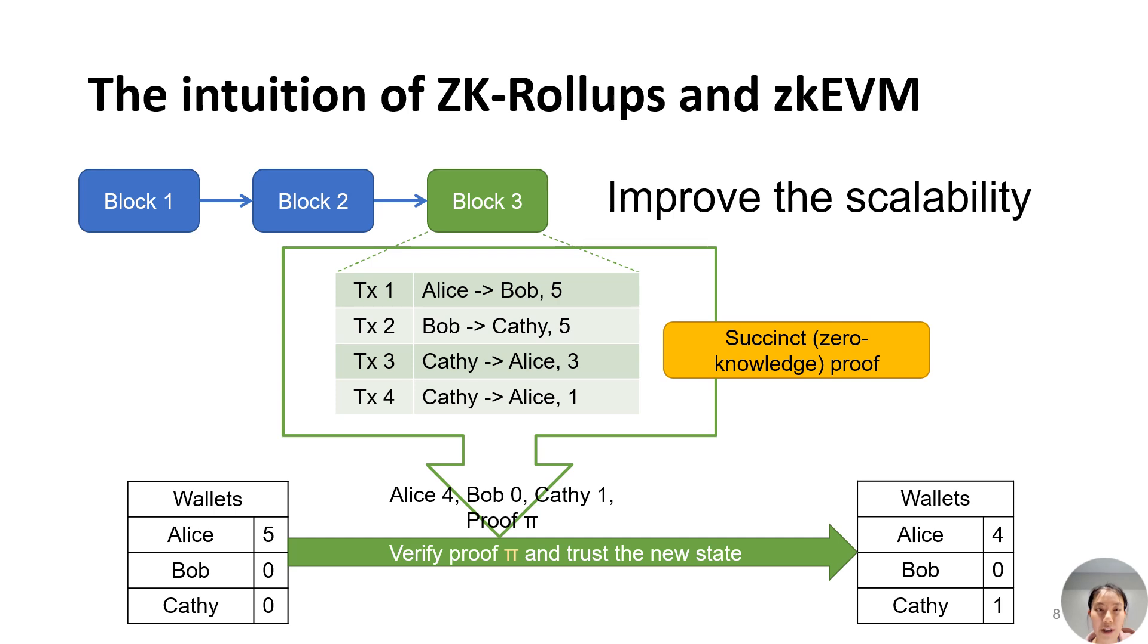However, suppose a powerful machine can compute the results and generate a succinct proof for those transactions. In that case, each user can efficiently verify the proof and update their state with the results, which highly improves the scalability of blockchain applications. This process is called ZK-Rollups. For zkEVM, transactions are replaced with smart contracts that support more functionalities.